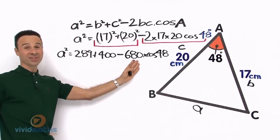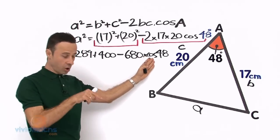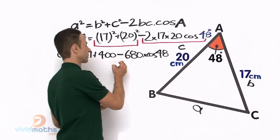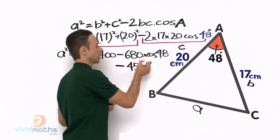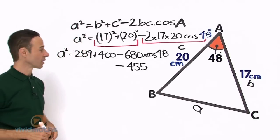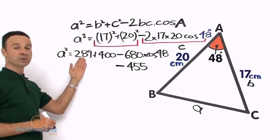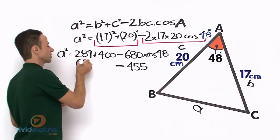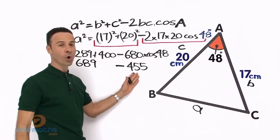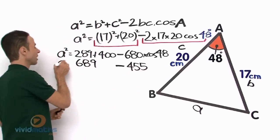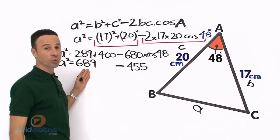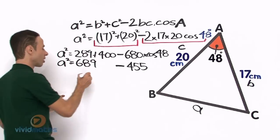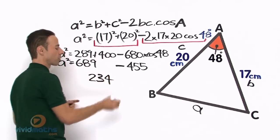I am going to further simplify this section here on the right. 680 times cos 48 on your calculator will give you a grand total of 455. On the left-hand side, if we add up 289 plus 400, that is going to be 689. So 689 minus 455. So a² equals that. Now let us subtract one from the other: 689 minus 455 yields us on the calculator a grand total of 234.